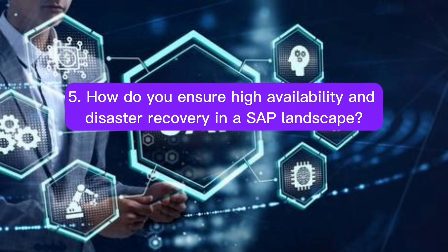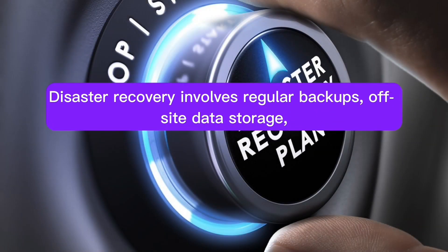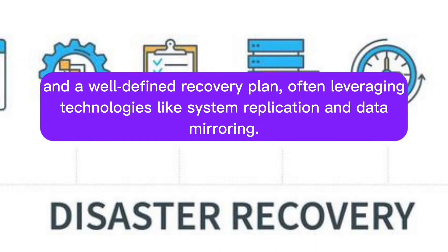Question 5: How do you ensure high availability and disaster recovery in a SAP landscape? Answer: High availability is achieved through system redundancy, load balancing, and failover mechanisms. Disaster recovery involves regular backups, off-site data storage, and a well-defined recovery plan, often leveraging technologies like system replication and data mirroring.